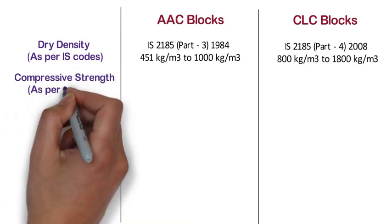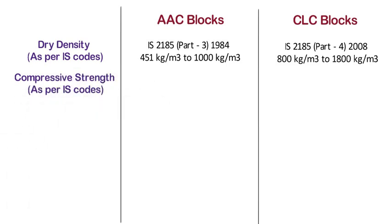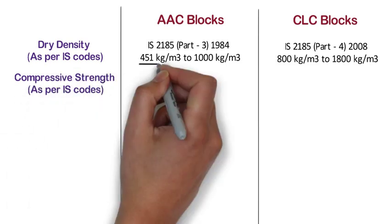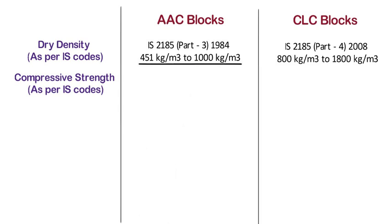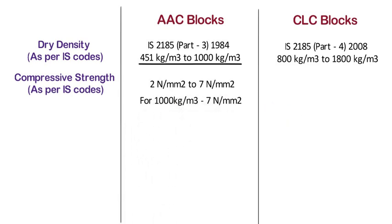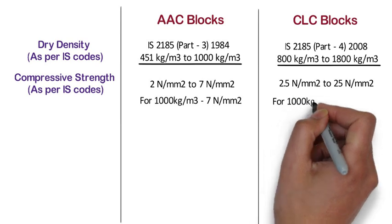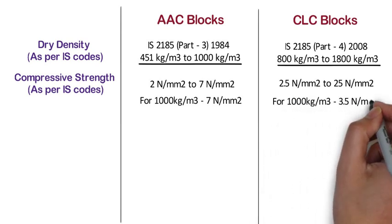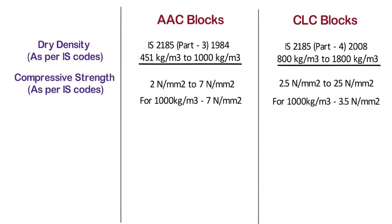Compressive strength as per IS codes. Compressive strength of AAC blocks, depending on density and grade, ranges from 2 to 7 N/mm². For a density of 1000 kg/m³ of AAC block, the compressive strength is 7 N/mm². Whereas, compressive strength of CLC blocks ranges from 2.5 to 25 N/mm² for different densities. For a density of 1000 kg/m³ of CLC block, the compressive strength is 3.5 N/mm².